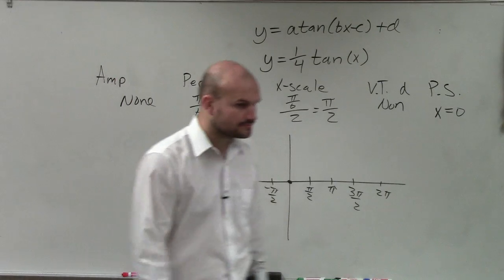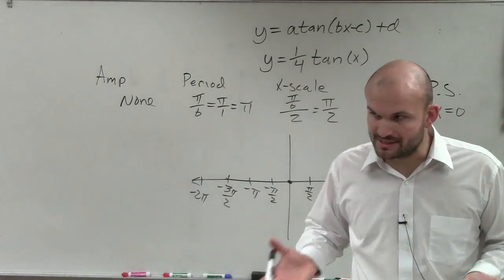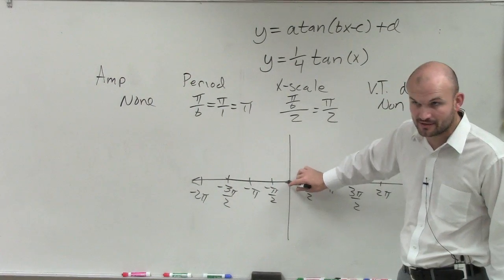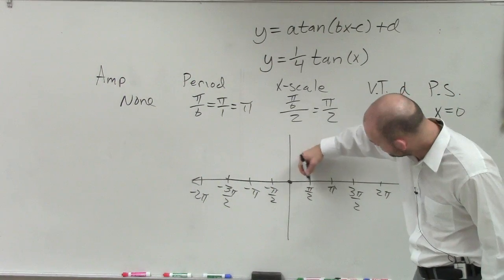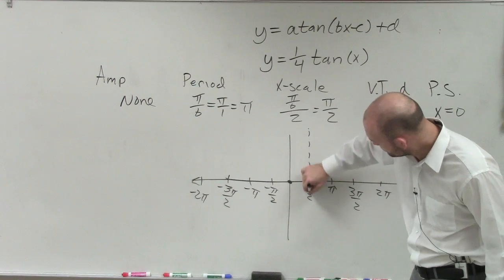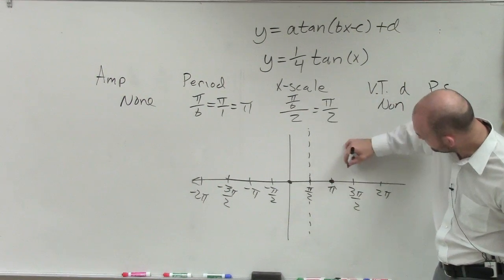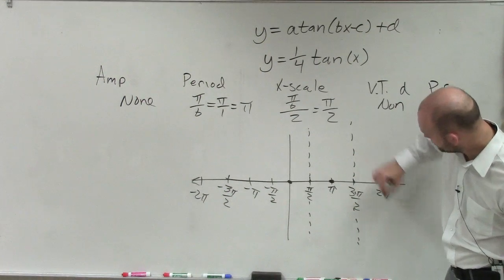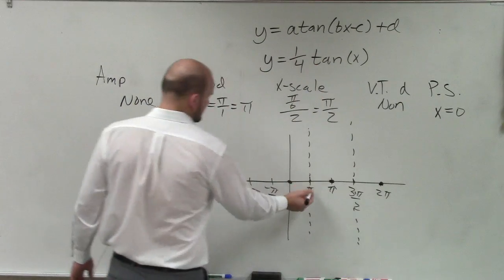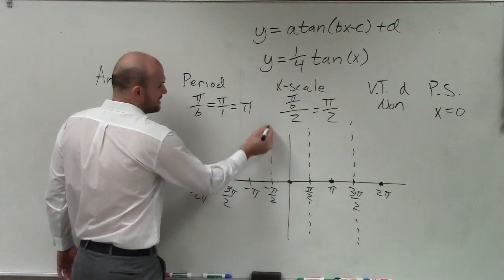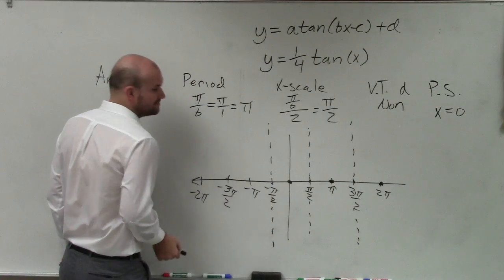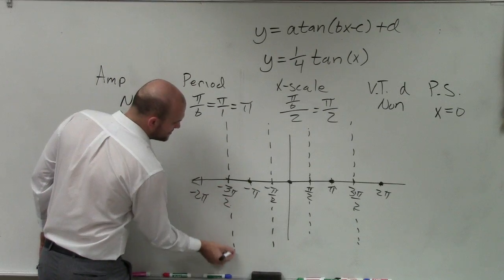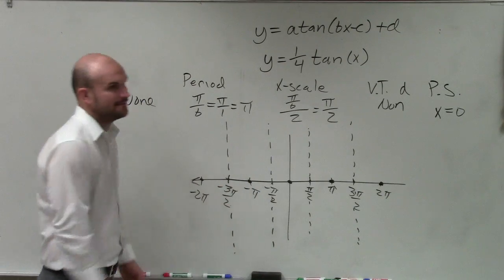So the first important point, as you guys looked at, we know that at 0 the tangent graph intersects right here. The next important point is an asymptote. Then the next important point is an x-intercept. Then asymptote, then x-intercept. Over here I'm going to work into the left. We have x-intercept, next important point for tangent is going to be an asymptote, next important point x-intercept, next important point asymptote, then an x-intercept again.